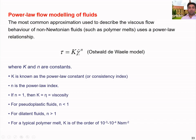Gamma dot is the shear rate in units of per second. n is the power law index, which depends on the material type. If k equals eta and n equals 1, you get tau equals eta times gamma dot — that is Newton's law of viscosity, representing Newtonian behaviour.